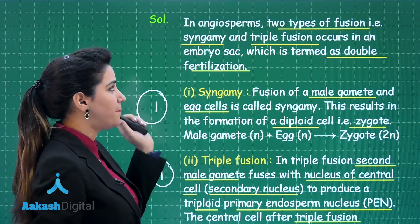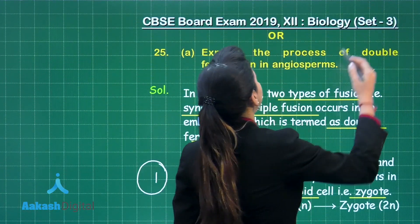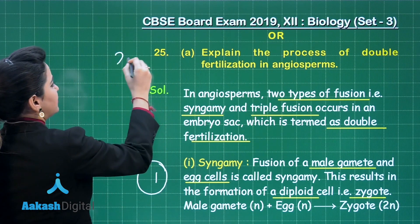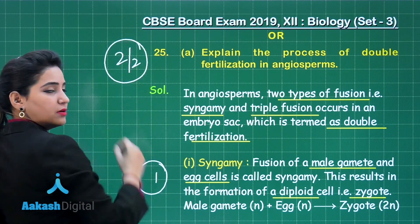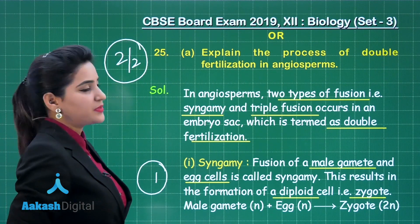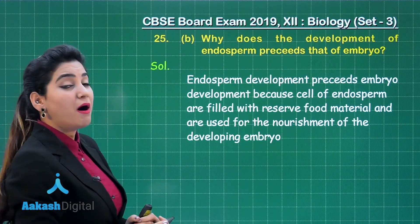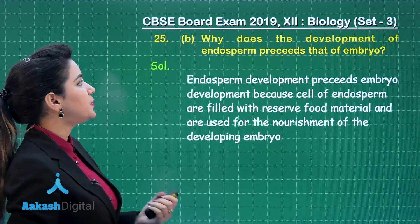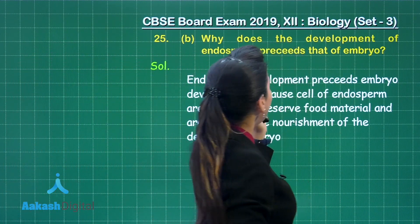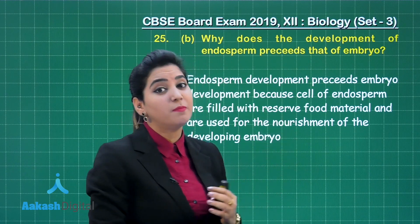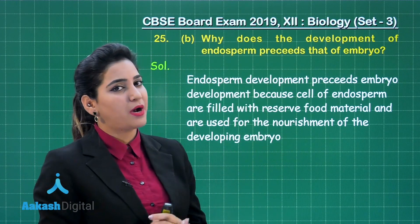So two marks for part A. Moving further to part B: why does the development of endosperm precede that of an embryo? This is a sort of adaptation.